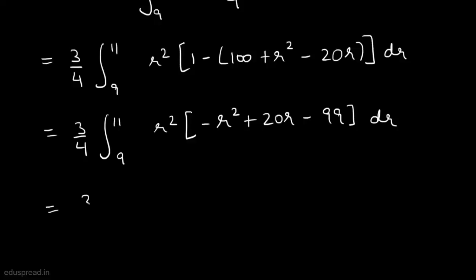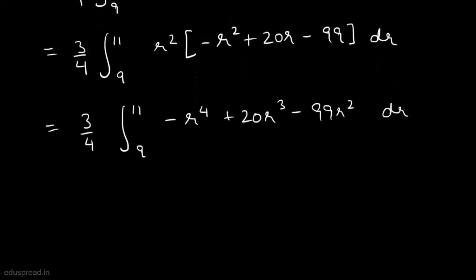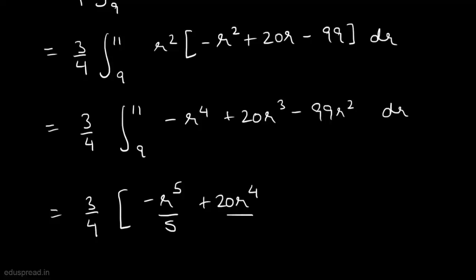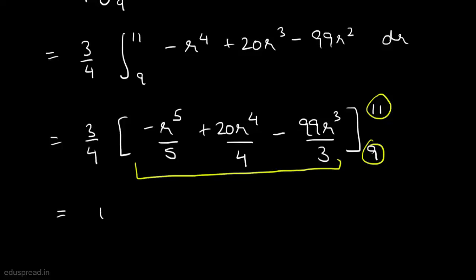This equals (3/4) times the integral from 9 to 11 of (r⁴ plus 20r³ minus 99r²) dr. We put the values r = 9 and r = 11 into this expression, and solving it we get 100.2. So the expected value of r² is equal to 100.2.